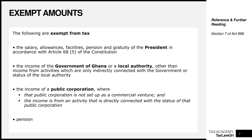The next thing to be aware of is the income of a public corporation — a corporation set up by government to undertake different initiatives. The income of the public corporation is exempt where they are not set up as a commercial venture. So generally, public corporations are exempt from tax to the extent that the public corporation is not set up as a commercial venture.